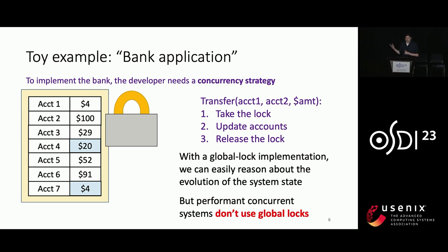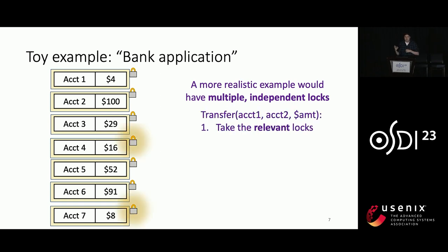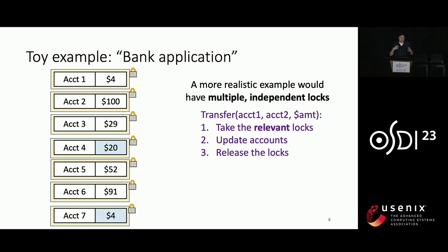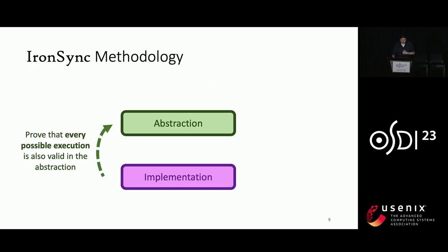However, performant concurrent systems usually don't use global locks like this. A more realistic implementation would have multiple independent locks — say one per account — and we would implement the transfer function only by taking the locks we're actually going to be manipulating. This is better for performance, but it makes it harder to reason about the global state of the system, because other threads might come in and manipulate the other accounts we don't have locks on. It can be difficult to understand how the global state evolves, making it hard to establish correspondence without global reasoning.